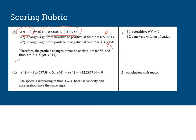So here's your conclusion. So one point for showing that you considered when the velocity is zero. And then two points for both correct answers with justification. If you get one right answer, you don't get one point. You have to get both.